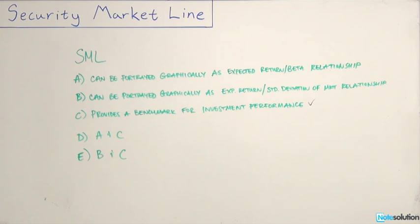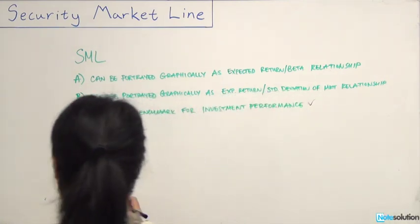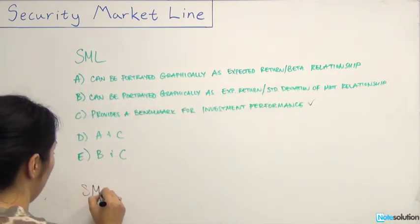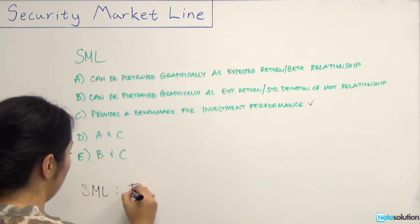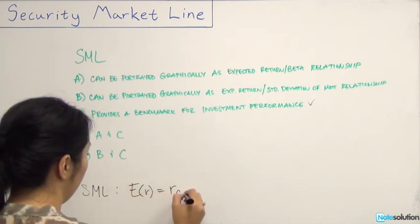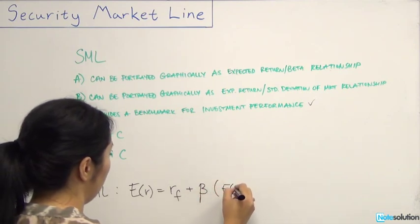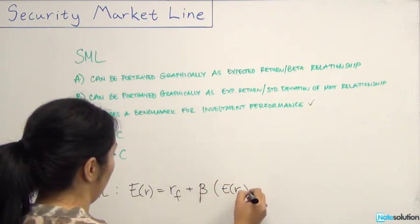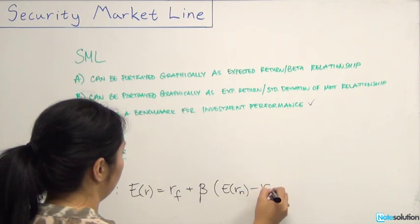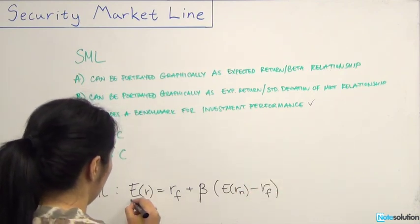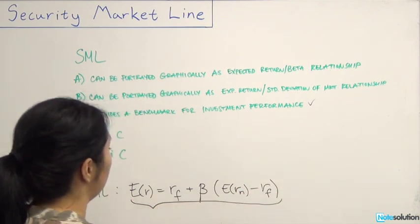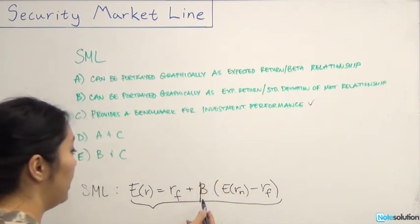We know that the SML actually can be defined by this equation. So SML expected return is equal to risk-free rate plus beta times the risk premium, so expected return of the market minus risk-free rate.